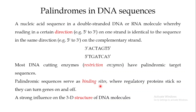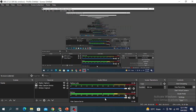Thirdly, these palindromic sequences have a very strong influence on the 3D structure of the DNA molecule. You know that when the 3D structure of a DNA molecule changes, that has a lot of impact on the function of the DNA. So identifying palindromic sequences in the DNA sequence is very important: they help identify cutting sites for restriction enzymes, they are involved in the regulation of gene expression, and they have a strong influence on the 3D structure of the DNA molecule.